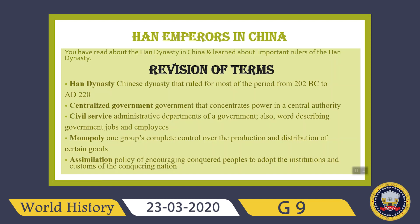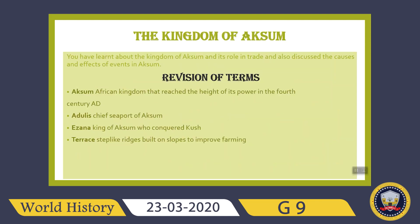Civil services are the administrative departments of a government — describing government jobs and employees. Monopoly means one group's complete control over the production and distribution of certain goods. Assimilation is a policy of encouraging conquered peoples to adopt the institutions and customs of the conquering nation.